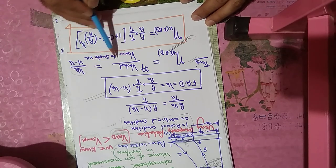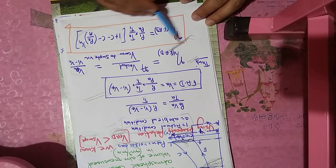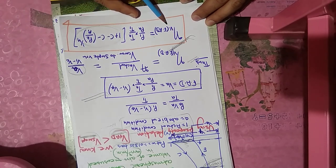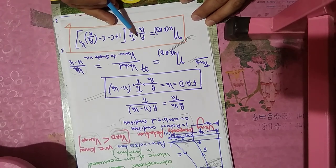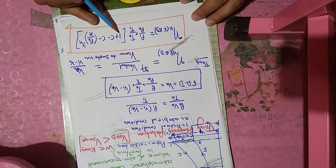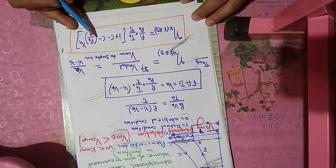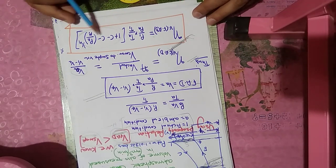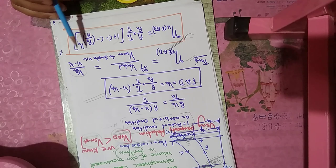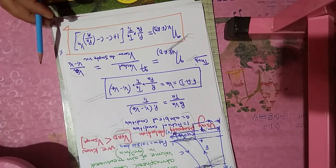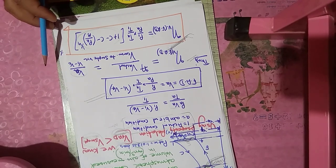When we solve it, the volumetric efficiency comes out to: η_v = (P1/P_a) × (T_a/T1) × [1 + c − c(P2/P1)^(1/n)], where c is the clearance ratio and n is the polytropic index. This is the end of this lecture and also the end of this unit. Thank you.